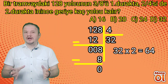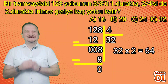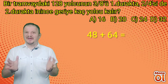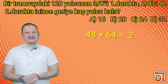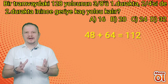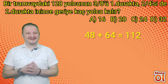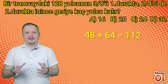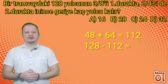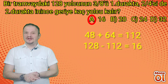1. durakta 48, 2. durakta 64 yolcu indi. 48 ile 64'ü toplayalım: 48+64=112. İlk iki durakta toplam 112 yolcu indi. En başta 128 yolcu vardı; 128-112=16 yolcu kalır. Doğru seçenek A seçeneğidir.